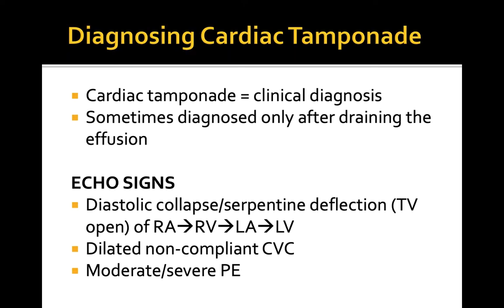Cardiac tamponade physiology occurs when the pressure within the pericardial sac is higher than the pressure within one or more of the cardiac chambers, resulting in impaired diastolic filling of that chamber. Classically, the right atrium is compromised first; however, this may differ in patients with heart defects or severe pulmonary hypertension.